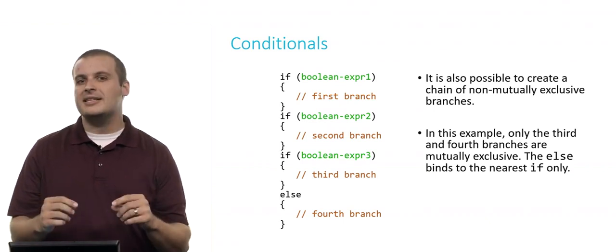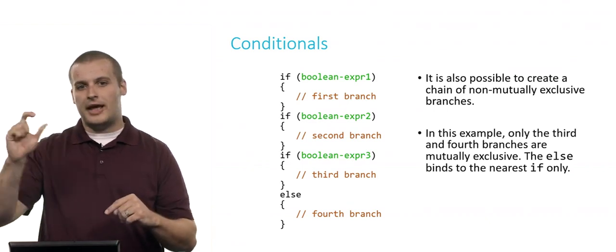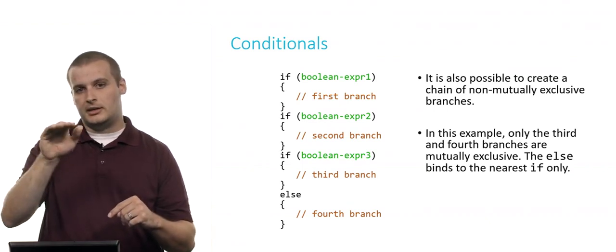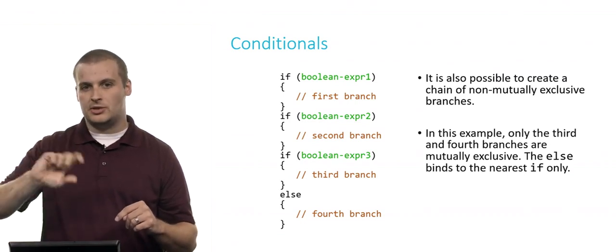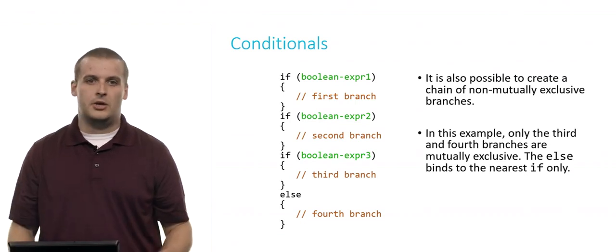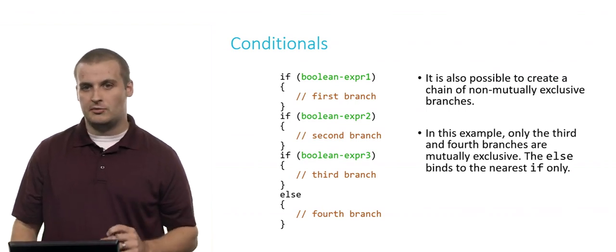The reason for this is that the else will only bind to the nearest if. So even though there's an else here, that doesn't necessarily create a mutually exclusive chain of everything. It's only that expression there with Boolean expression 3 that's mutually exclusive with the else. So it is possible and sometimes quite useful, as I said, to create a chain of not mutually exclusive branches.